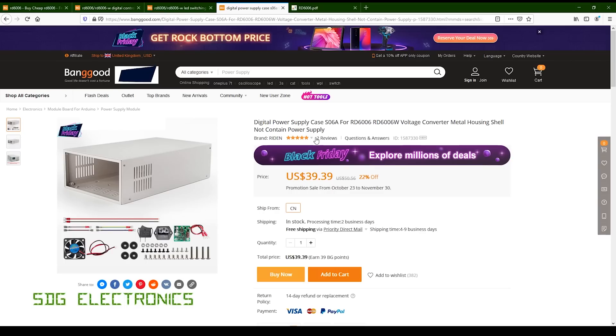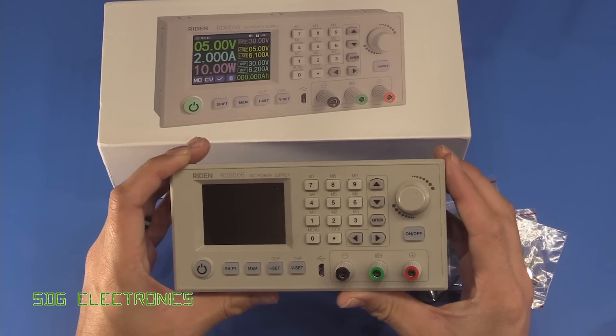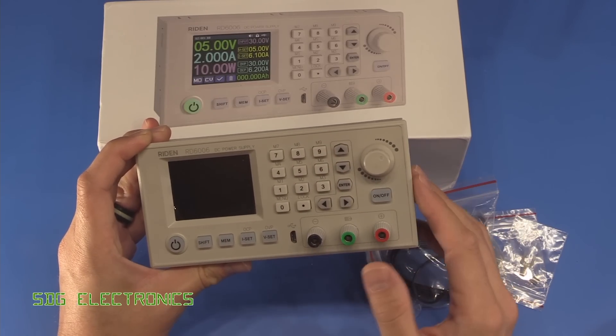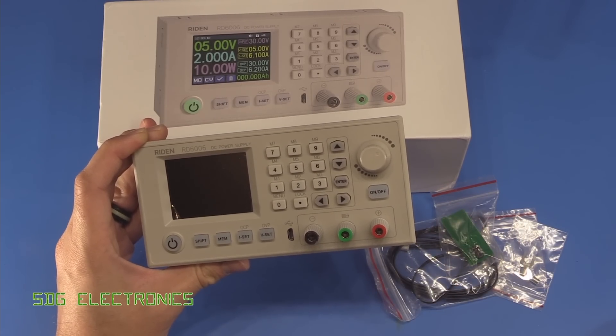Then you've got the casework itself which is coming in at $39. So if you add that up, it's very similar in price to one of the mid to higher end Chinese power supplies that you can buy on the likes of Banggood and AliExpress. But I think actually this is a much nicer unit and a little bit more configurable, and it certainly seems to have really quite a nice user interface.